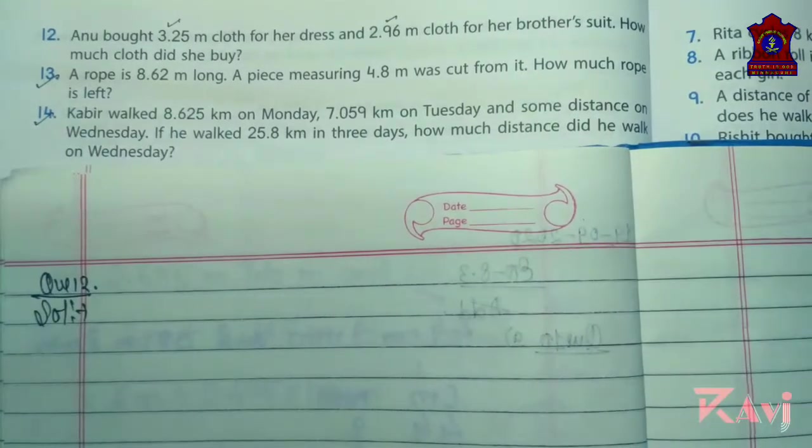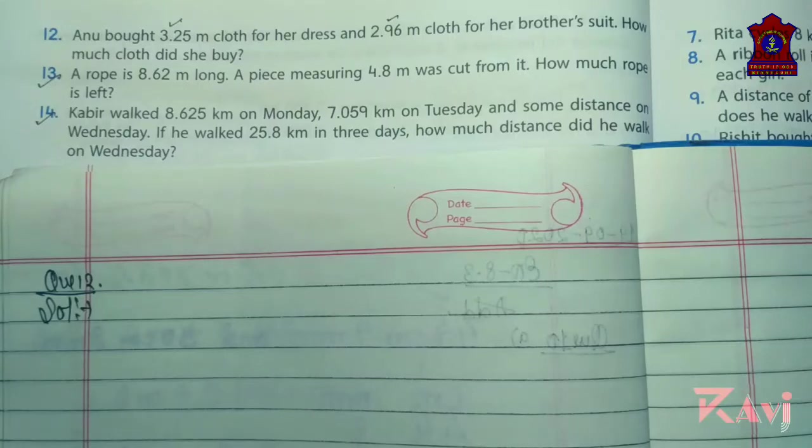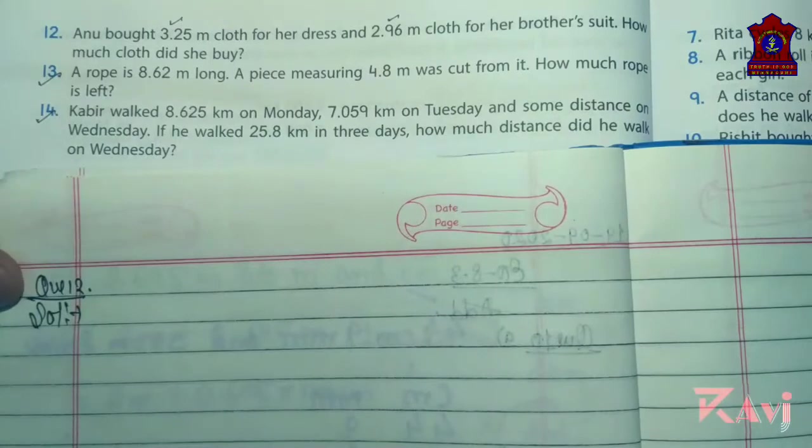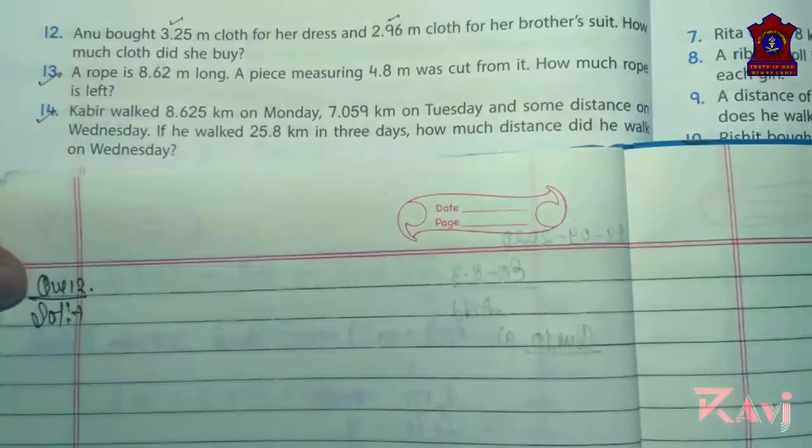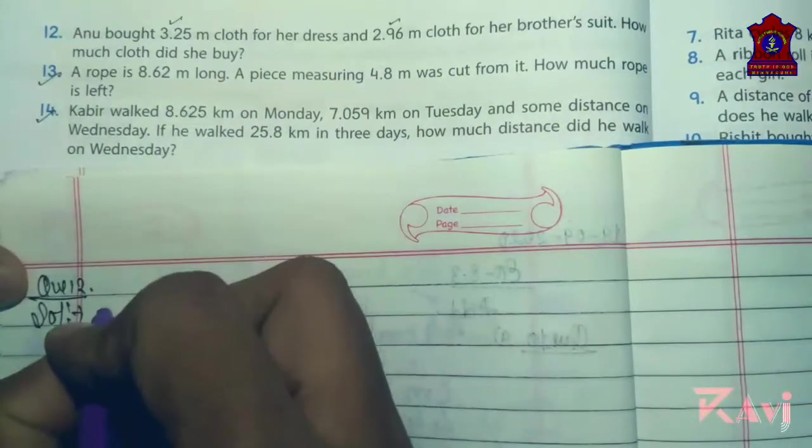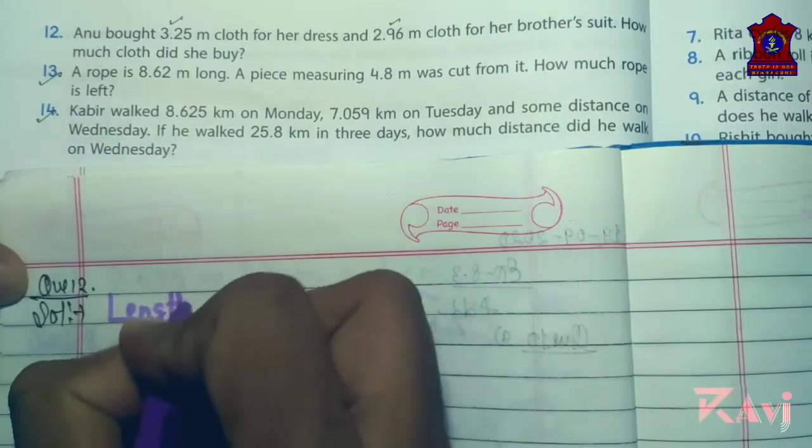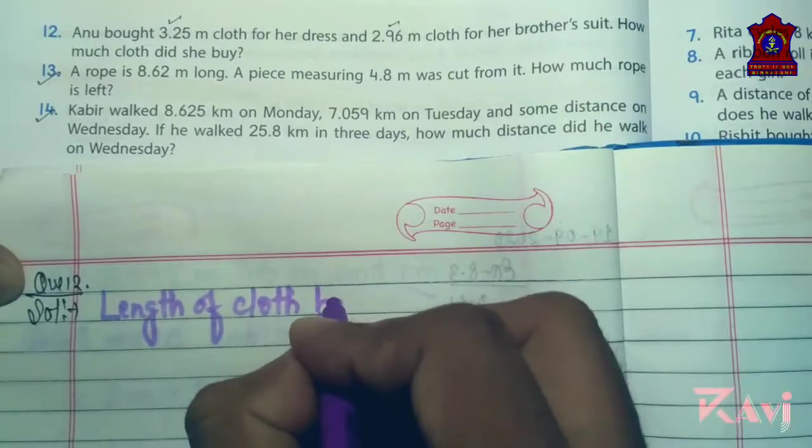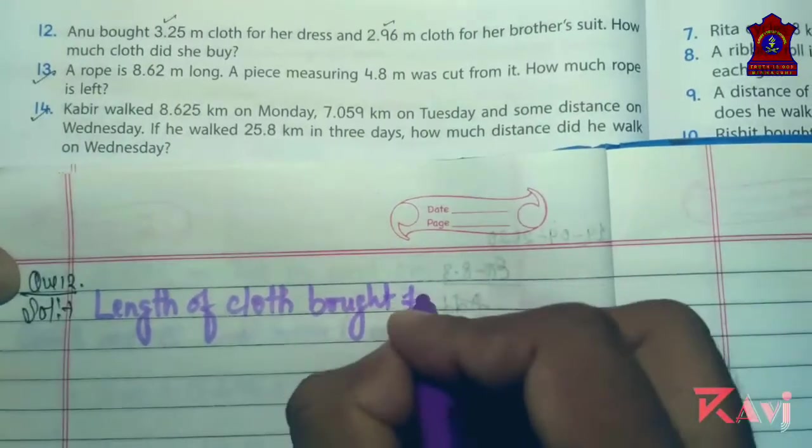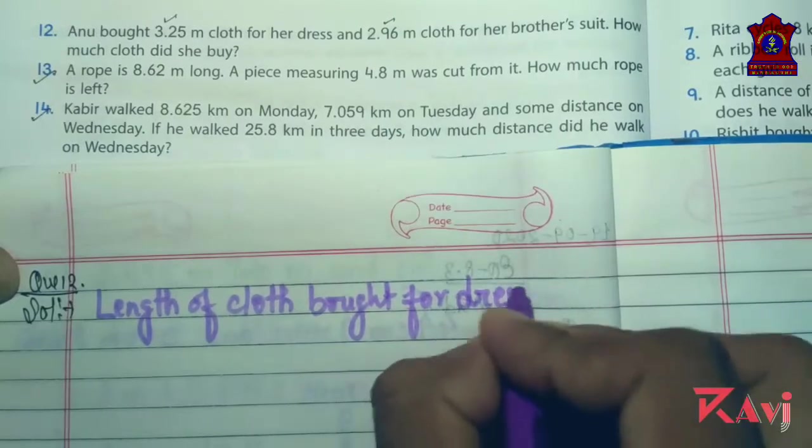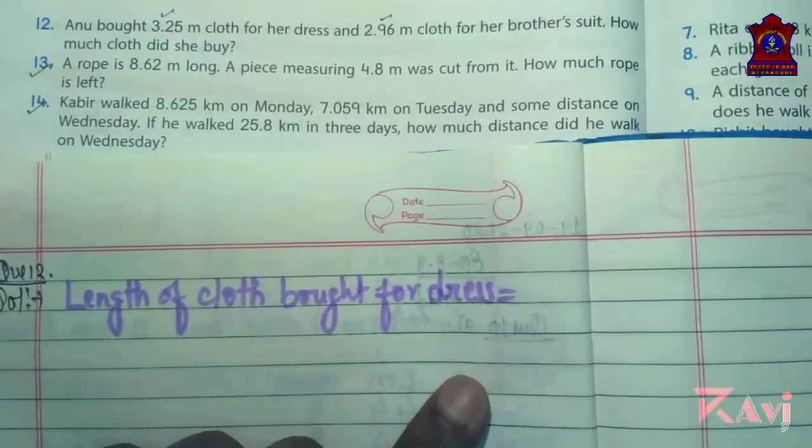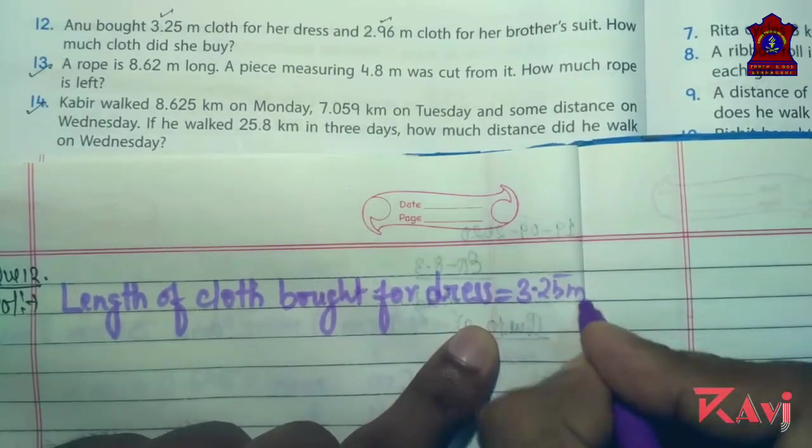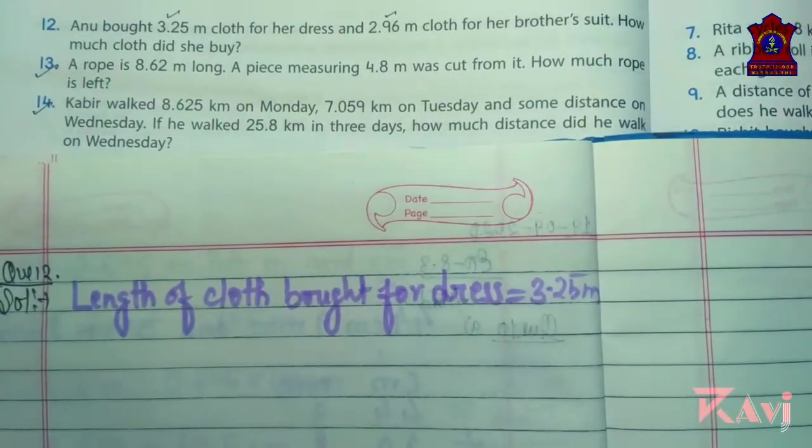So what is the statement we'll write first. Anu bought 3.25 meter cloth for her dress. Length of cloth bought for dress equals to 3.25 meters.